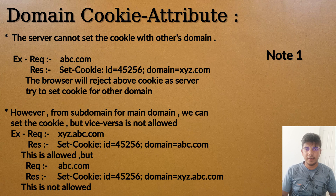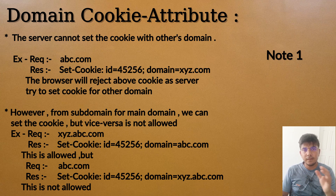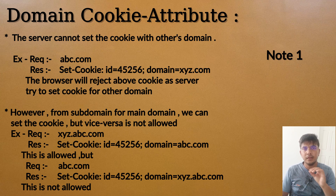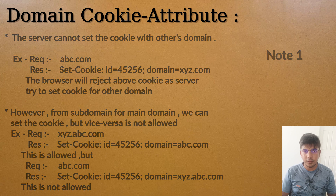For example, if you are making a request to xyz.abc.com and in the response the domain is set as abc.com, the server can set the cookie for the main domain — so while the request is for a subdomain, the server can set the cookie for the main domain. But vice versa is not allowed: if the request is abc.com and the response sets domain equals xyz.abc.com, the browser will reject that cookie.